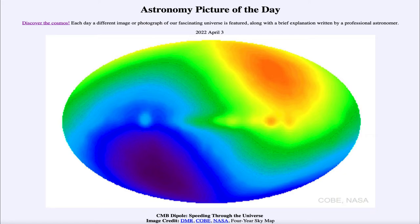It is titled 'CMB Dipole Speeding Through the Universe.' So what do we see here? Well, this is a map of the entire universe — not looking at the stars and galaxies as we often do, but looking at the cosmic microwave background radiation. This was studied by the COBE satellite in 1993, and looking at that light, we see some very interesting variations.